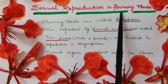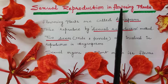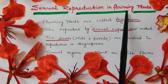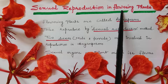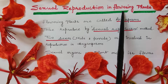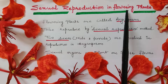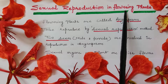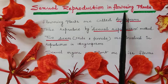In class 9, you studied about the five kingdom system of classification under chapter diversity in living organisms. The five kingdom system was given by R.H. Whittaker. The five kingdoms are: Kingdom Monera, Kingdom Protista, Kingdom Fungi, Kingdom Animalia, and Kingdom Plantae. Kingdom Plantae is further divided into divisions like Thallophyta, Bryophyta, Pteridophyta, Gymnosperms, and Angiosperms. So flowering plants are called Angiosperms.